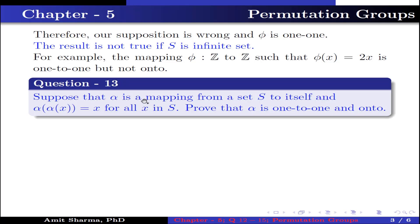Question number 13: Suppose that α is a mapping from a set S to itself and α(α(x)) = x for all x in S. Prove that α is one-to-one and onto. Solution: Given mapping α: S → S such that α(α(x)) = x for all x in S.